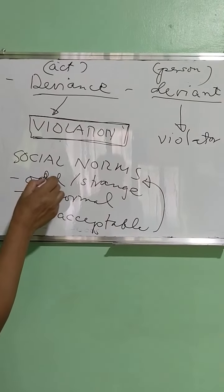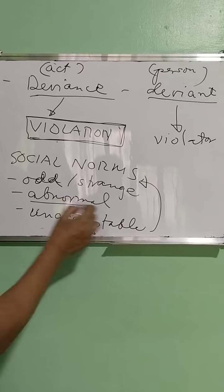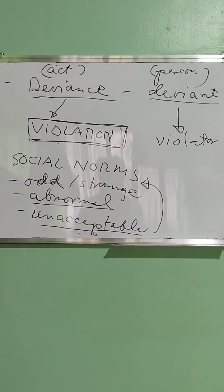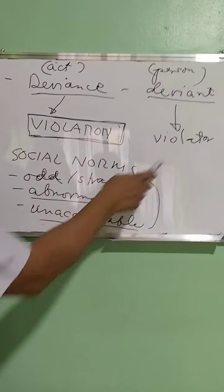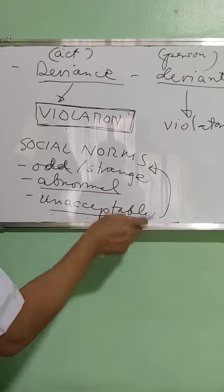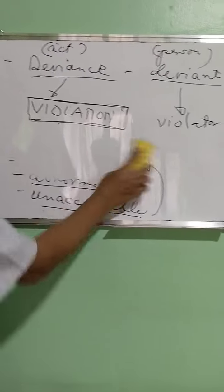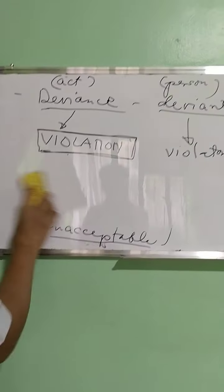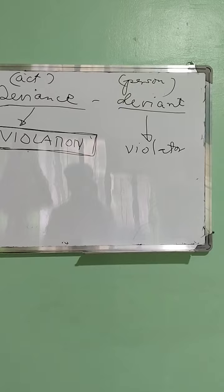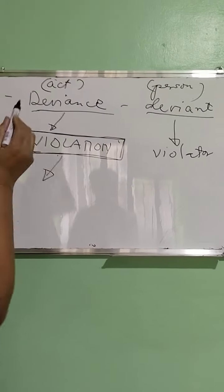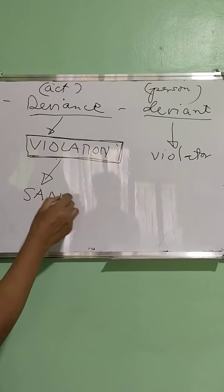When we say odd, it is something like weird. It is abnormal. It is unacceptable behavior. The violator would be somebody who is acting oddly or strangely or abnormally, or in some way that is unacceptable. If deviance is a violation, then when you have violated something, the result or the consequence would be to impose what we call a sanction.